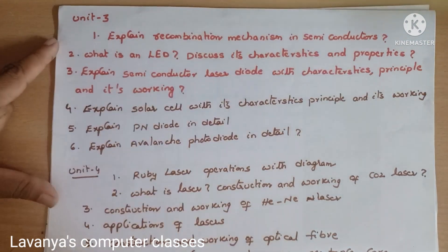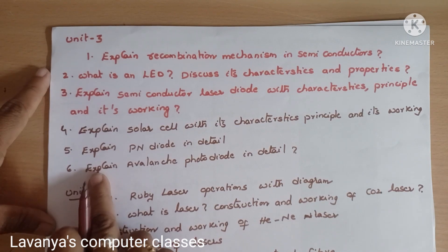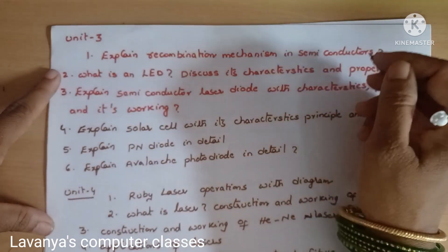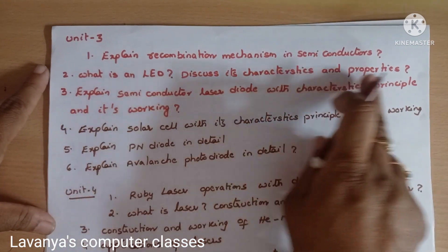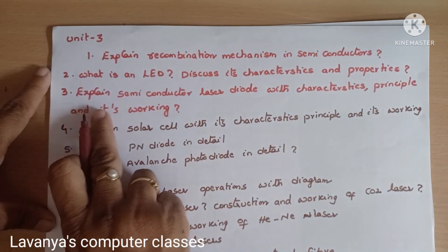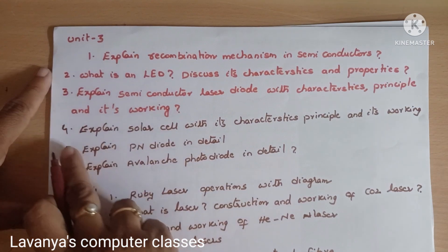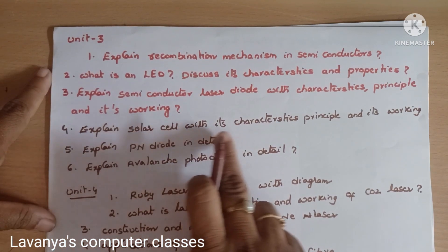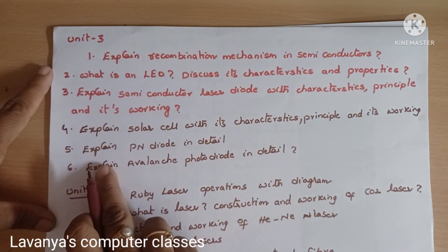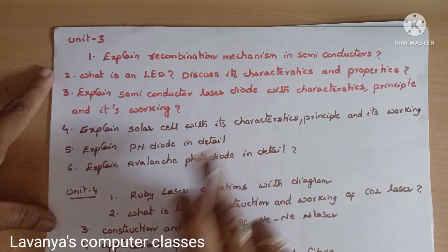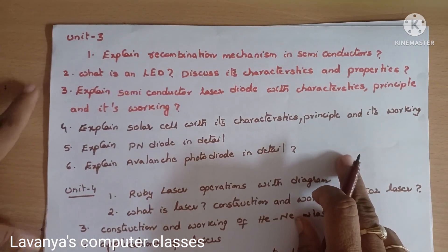Unit 3 questions: First, explain recombination mechanisms in semiconductors. Second, what is an LED? Discuss its characteristics and properties. Third, explain semiconductor laser diode with characteristics, principles, and working. Fourth, explain solar cell with its characteristics, principle, and working. Fifth, explain p-n diode in detail. Sixth, explain avalanche photodiode in detail.